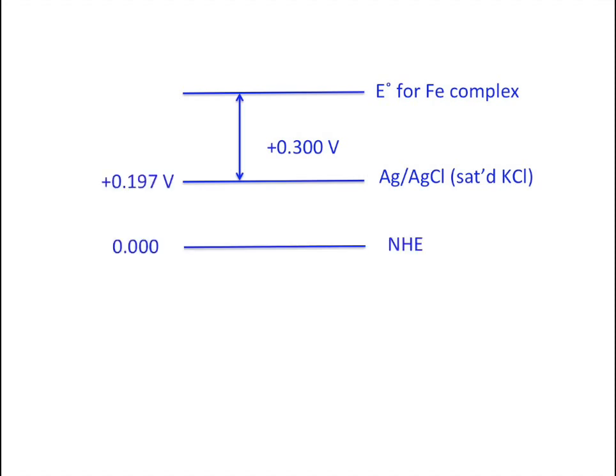We know that silver-silver chloride is 0.197 volts more positive than the normal hydrogen electrode. Our iron complex is more positive than the normal hydrogen electrode by this distance. So we see that we should sum these two values to get the potential for the complex with respect to the normal hydrogen electrode.